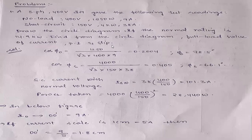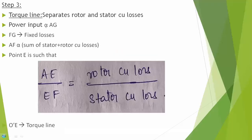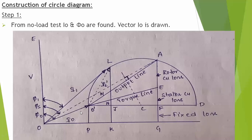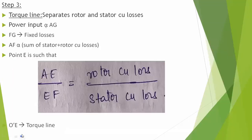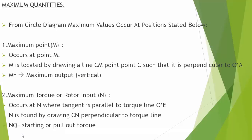First, we have to draw currents on the circle diagram. For finding out the currents, we have to draw I naught. For that we need the values of phi naught, phi s, and phi 1. If you know these angles, we have to draw the lagging currents with V at these phase angles — using phi naught you draw I naught, using phi s you draw I2 dash, using phi 1 you draw I1. So first we find the values of phi naught, phi s, and phi 1.